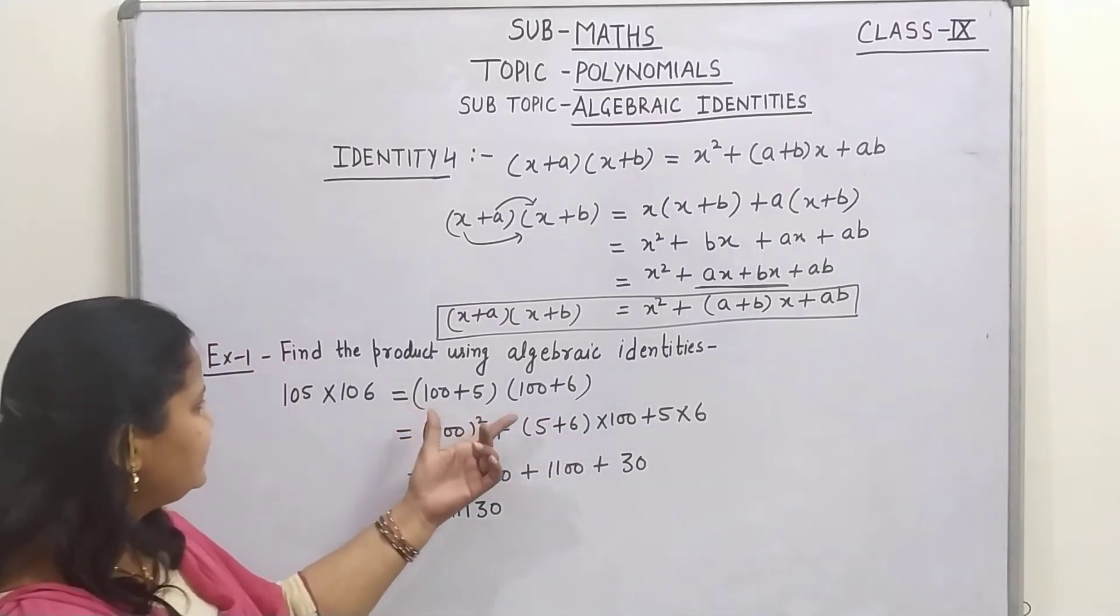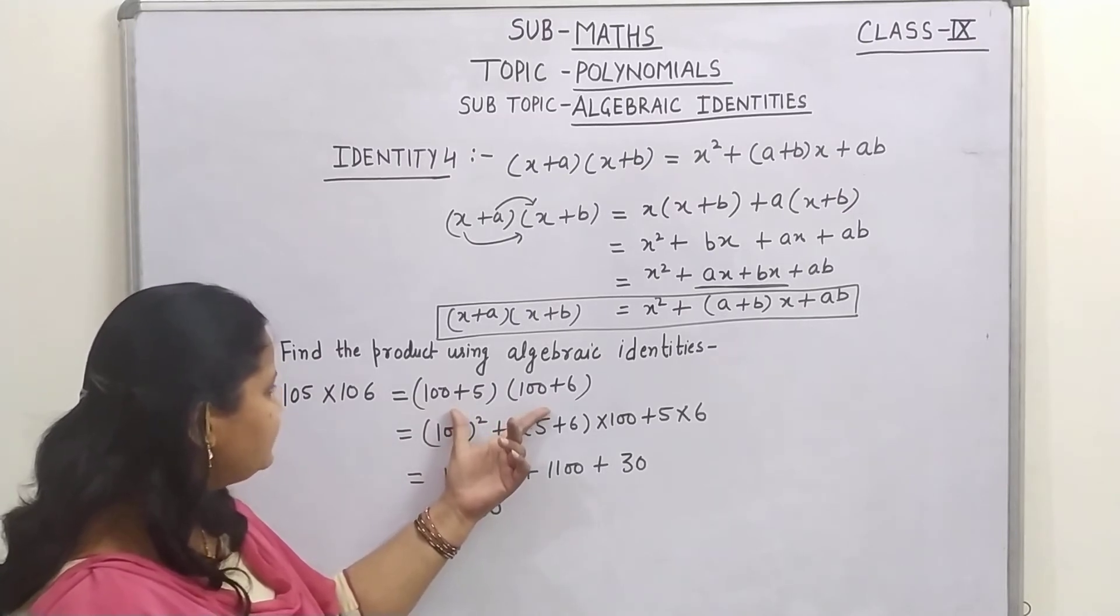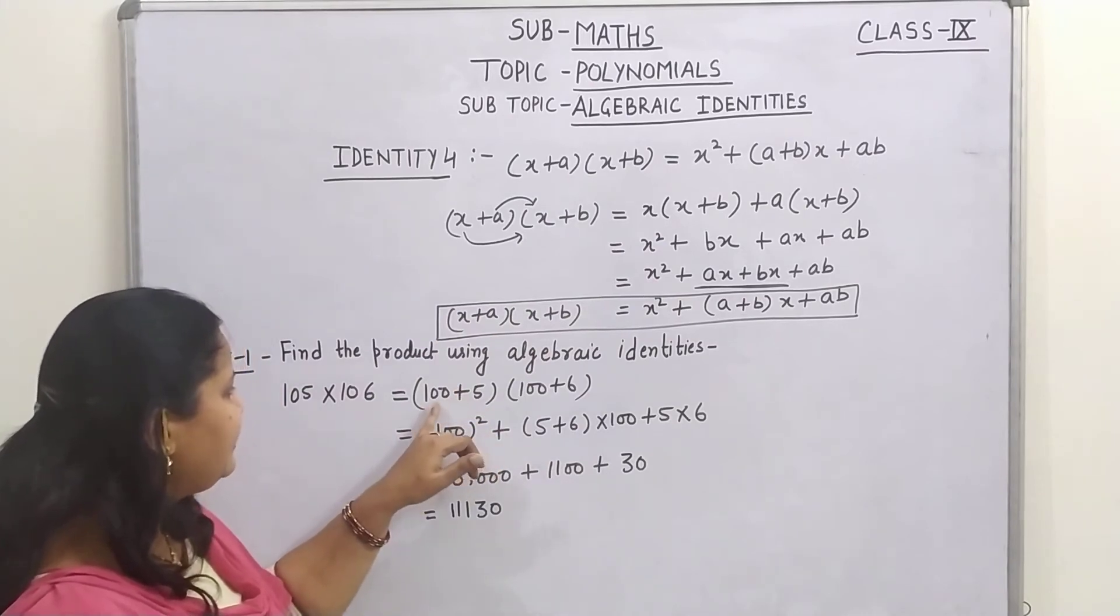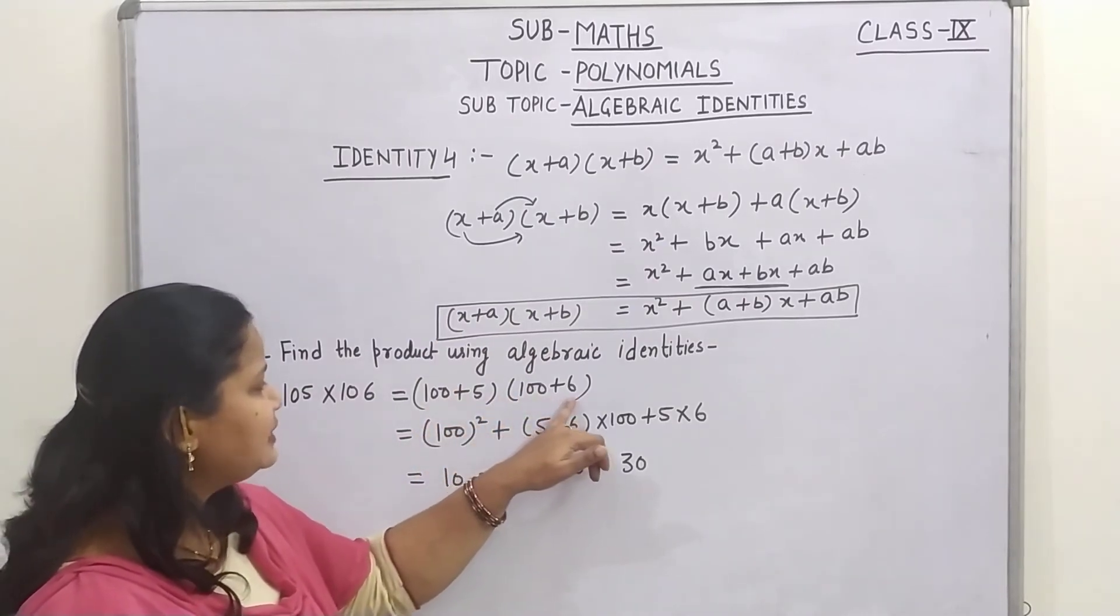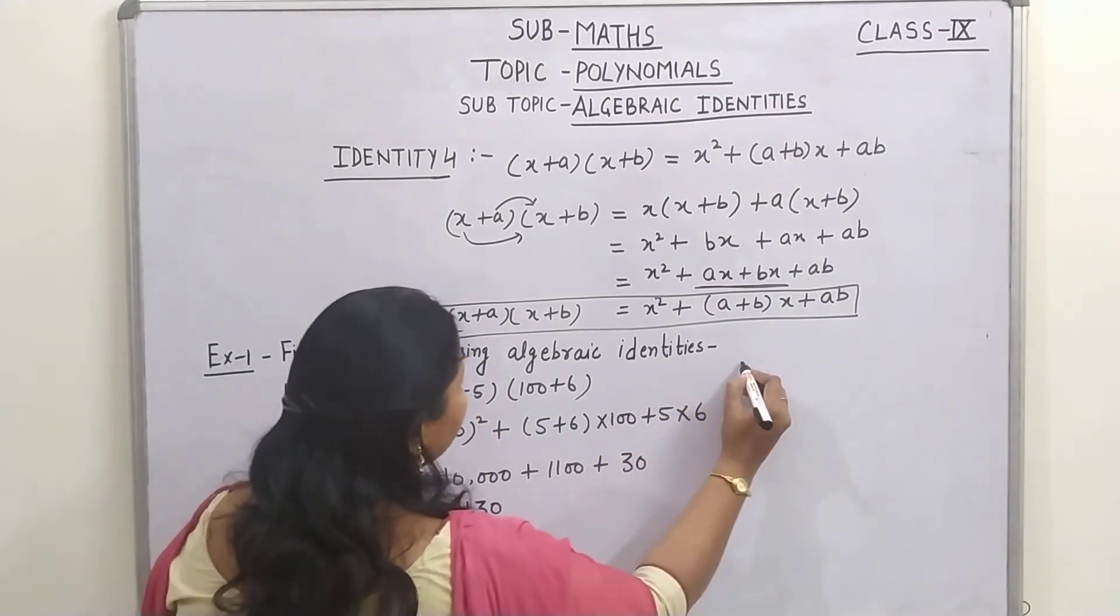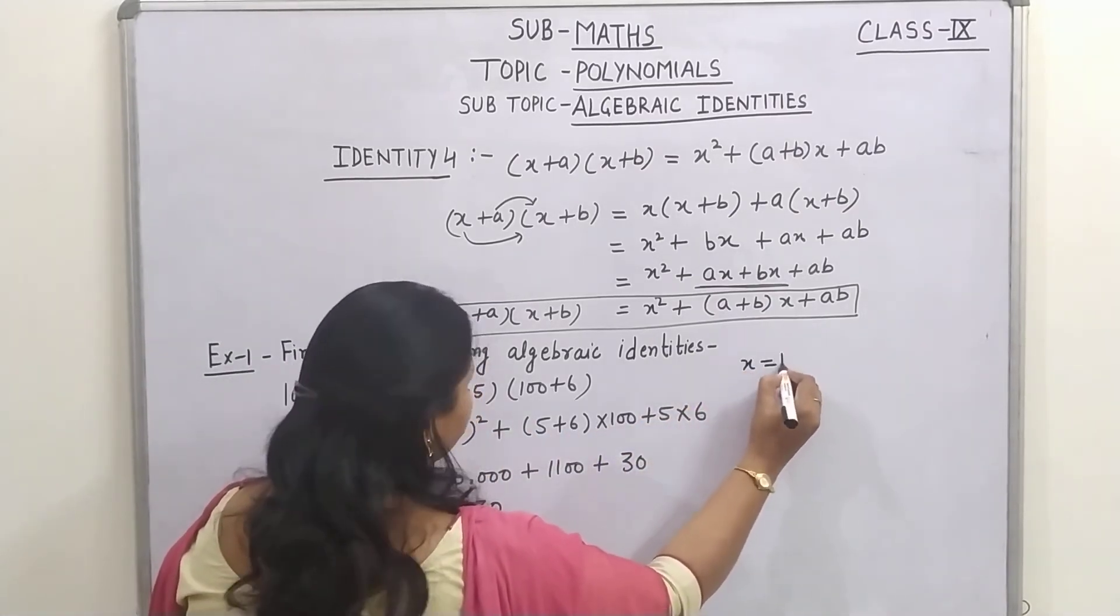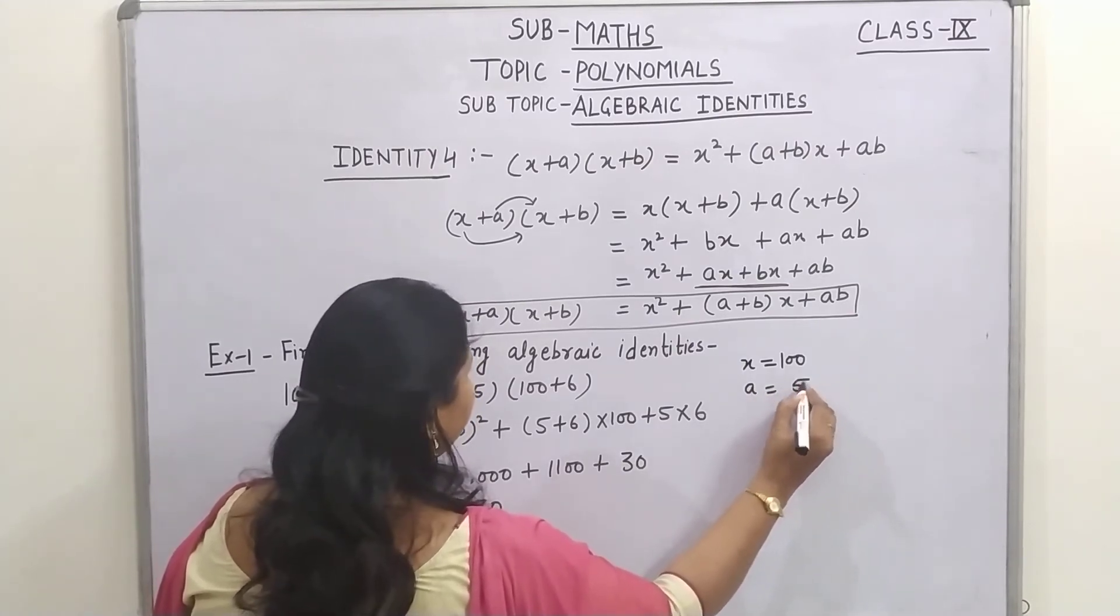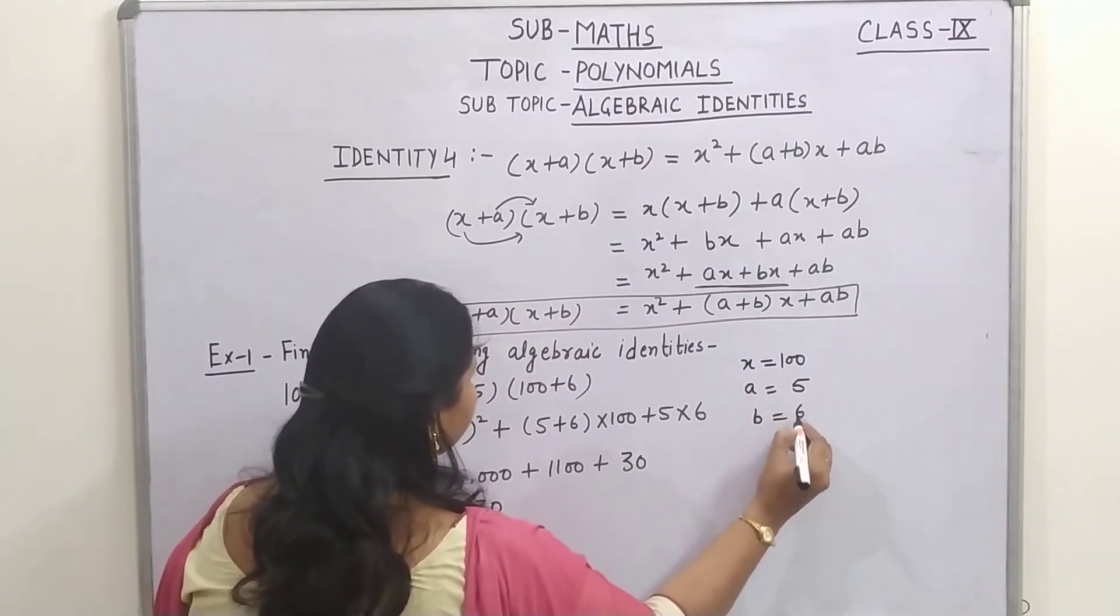Now children, as you can see, it becomes in the form of our identity like x plus a, x plus b, here we get 100 plus 5 and 100 plus 6. So children, you can see here, in place of x there is 100, in place of a there is 5 and in place of b there is 6.